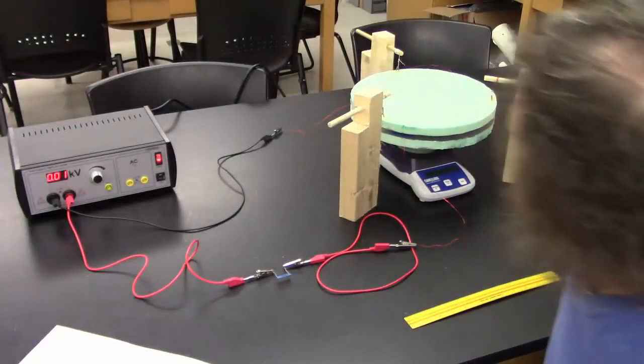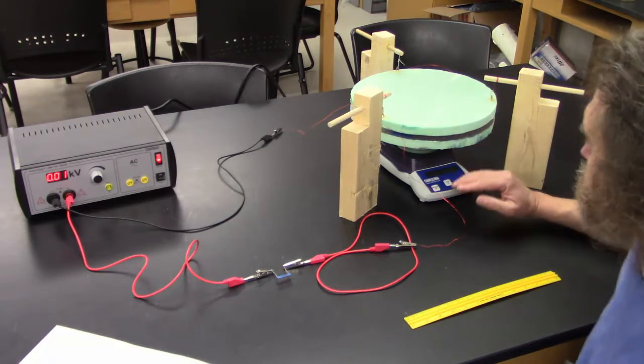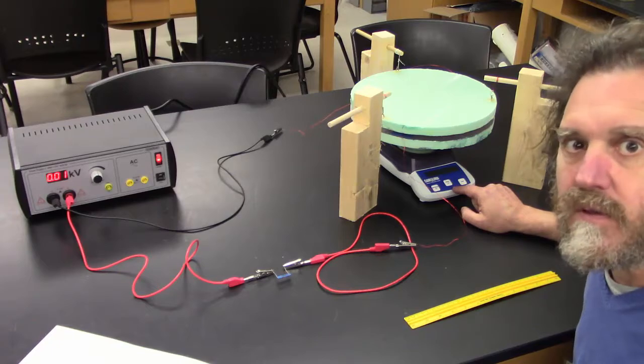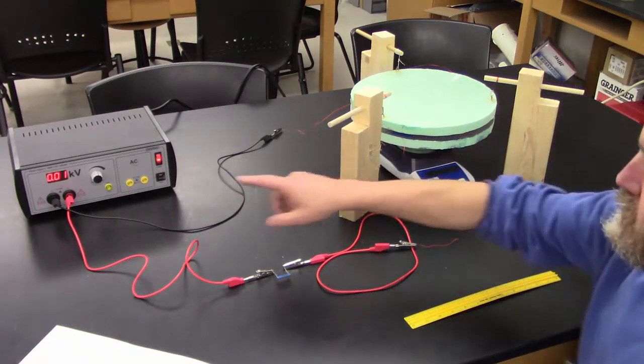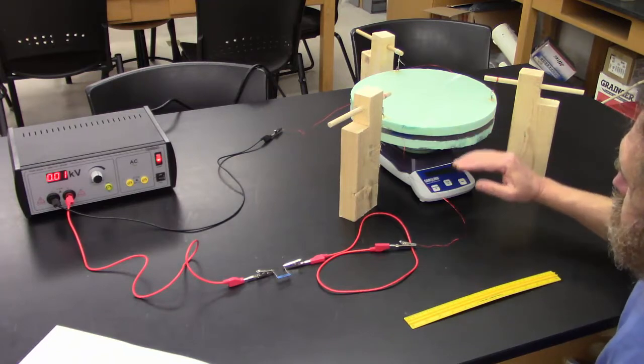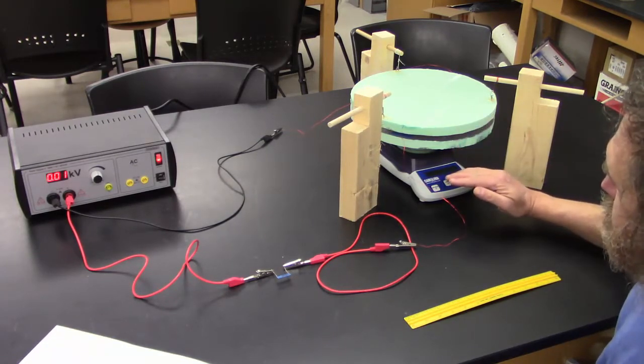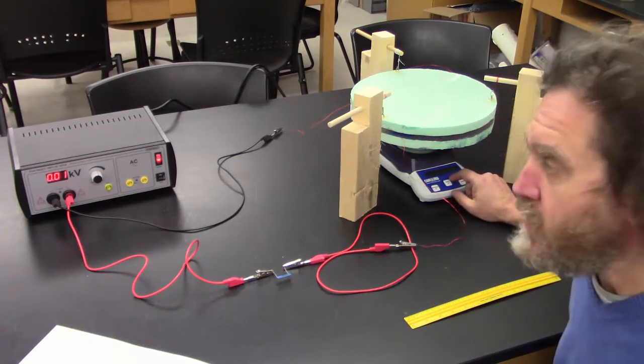So the way we're going to measure the force is the bottom plate of the capacitor is sitting on this digital scale. This scale can very accurately measure the amount of weight that's on it. And of course when the power is on, the plates will attract each other and the bottom plate will be pulled up, and that will register on the milligram scale.